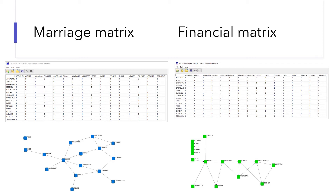This process is called permutation tests. At the end of tests, you get to know the chances of the observed correlation. If the chance is high, you don't have the evidence to conclude the correlation between the network of marriage ties and the network of business ties among the Florentine families. If the chance is low, it means the correlation is less likely to take place randomly. The two variables are less likely to be independent of each other. In other words, the two matrices are dependent on each other.